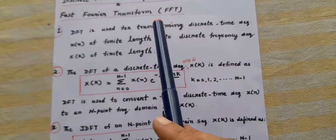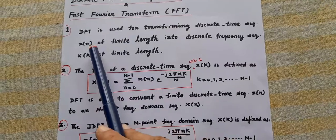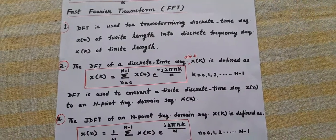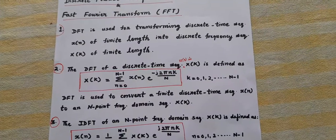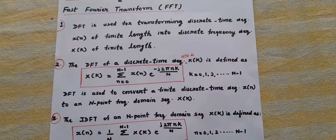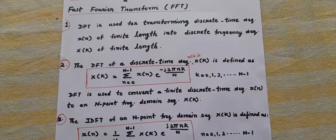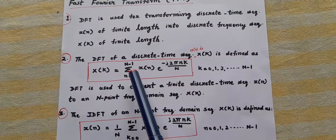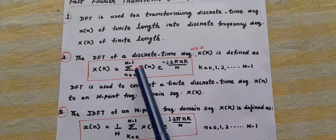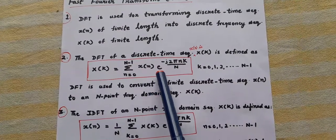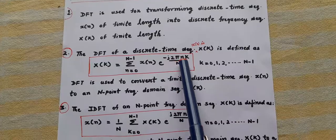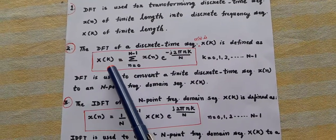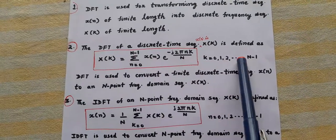DFT is used for transforming x(n) to x(k). Coming to the definition of DFT, the DFT of a discrete time sequence x(n) is x(k) and is defined as x(k) equals summation n equals 0 to capital N minus 1, x(n) e to the power minus j 2 pi n k by capital N, where k is varying from 0 to N minus 1.